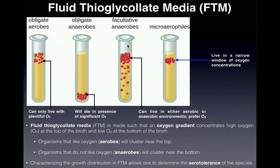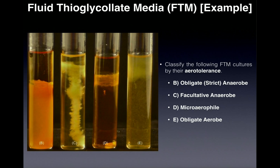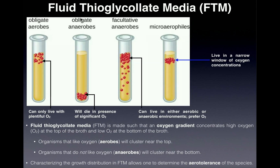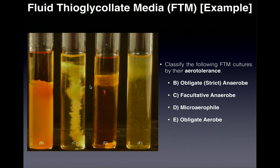Now let's look at some real tubes you might see in the lab. This first one, tube B, is an obligate or strict anaerobe. In FTM, the top one-third has oxygen and the bottom two-thirds is more anaerobic. You'll see growth in the bottom two-thirds, with absolutely none in the aerobic region at the top. That growth only in the bottom two-thirds is characteristic of an obligate anaerobe, also called strict anaerobe.